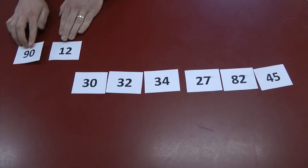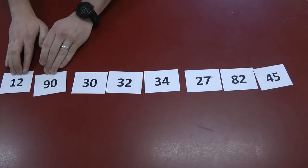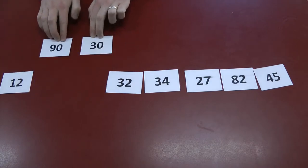So we take the first two on the far left. 12 is lower than 90, so we swap them around. Next two, 90 and 30. 30 is lower, we swap.